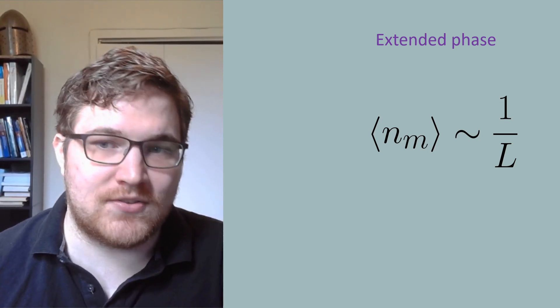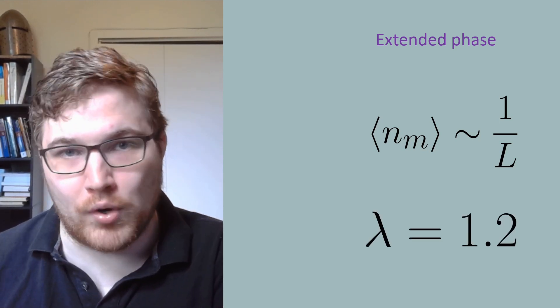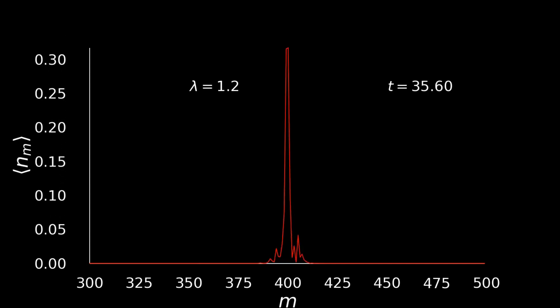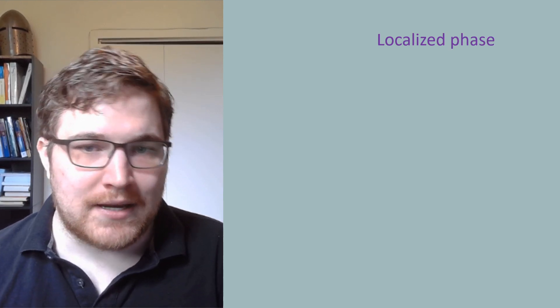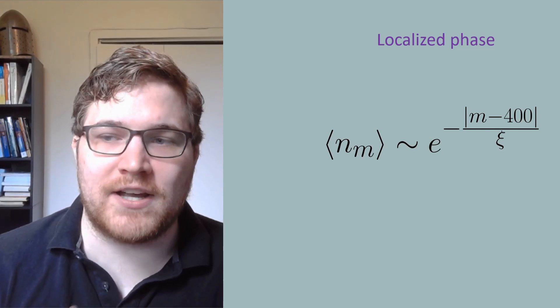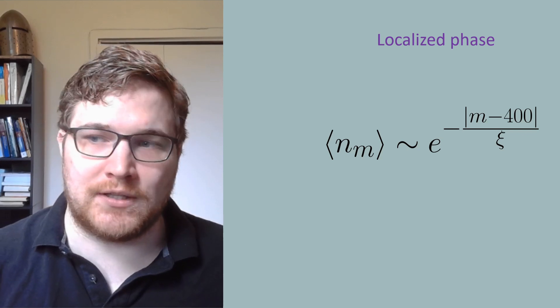Now we see that the electron cannot move away from its central location or its central region. This is called a localized phase. Now our number operators at late times are exponentially suppressed around where the electron started, which in our case was lattice site 400.